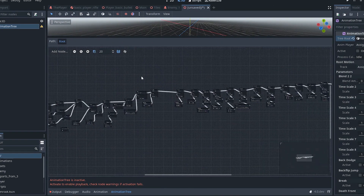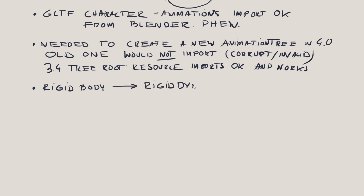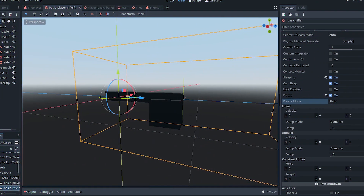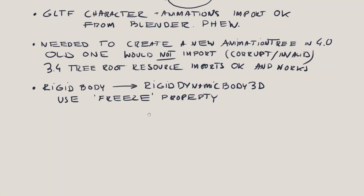Next up, rigid bodies. My weapons are all rigid bodies. In 3.4 they would just be sleeping and I would wake them up if they were going to be dropped, like when swapping weapons. I did notice that the gun was getting offset from my grip when moving, even though it was sleeping. There's a new property for rigid bodies — which are now called RigidDynamicBody3D — called freeze. When it's on, it literally makes your rigid body behave like a static body, so I turned that on and it worked.